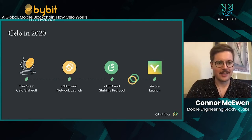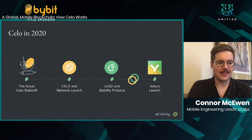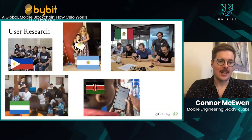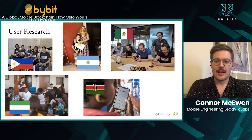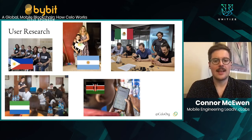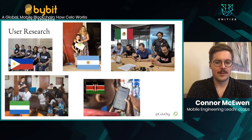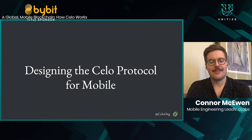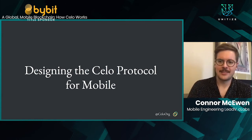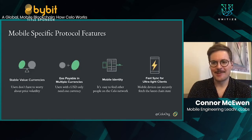Looking back at 2020, which has been a year that I think no one expected — we started with our great Celo stake-off, which was our incentivized testnet to recruit and help our initial set of validators get started. With those initial validators, we launched the Celo network in April, which included our native Celo asset. And then just last week, we launched our stable value currency, the Celo dollar, and the stability protocol on top of that, which keeps the Celo dollar pegged to the U.S. dollar. We're almost to the Valora mobile wallet launch, so it's been an exciting year.